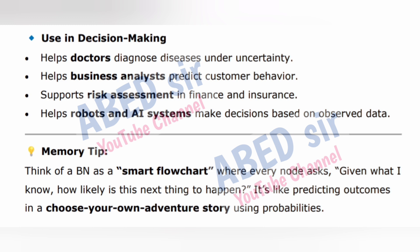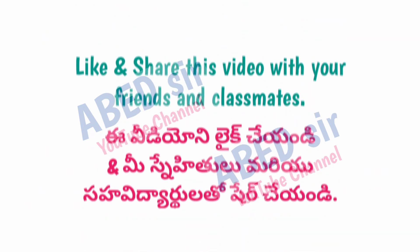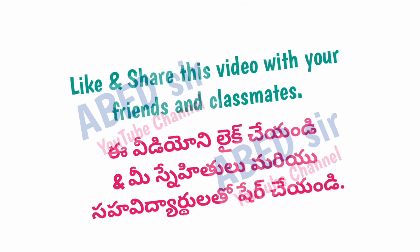Use in decision making: helps doctors diagnose diseases under uncertainty, helps business analysts predict customer behavior, supports risk assessment in finance and insurance, and helps robots and AI systems make decisions based on observed data. Memory tip: Think of a Bayesian network as a smart flowchart where every node asks, 'Given what I know, how likely is this next thing to happen?' It's like predicting outcomes in a choose-your-own-adventure story using probabilities.